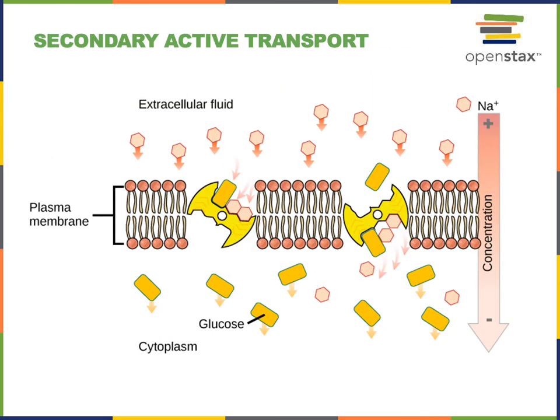In contrast to primary active transport, secondary active transport is where the primary transport of one molecule creates a concentration gradient that can then be used as the energy source to drive another molecule against its concentration gradient. The example we see here is the secondary active transport of glucose driven by sodium.